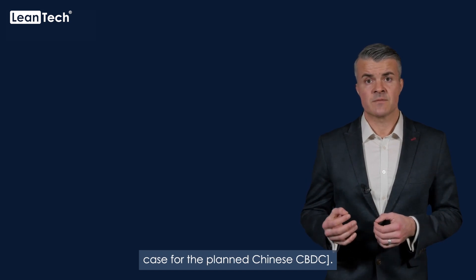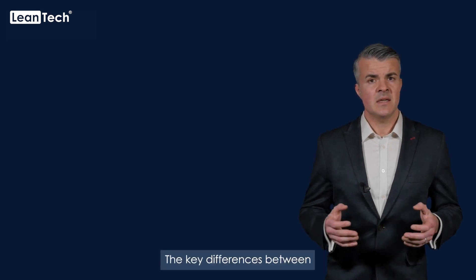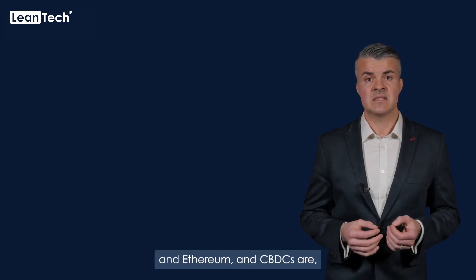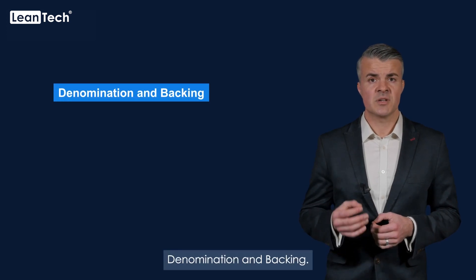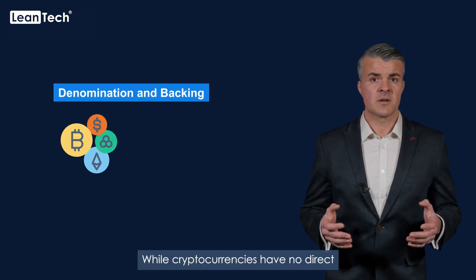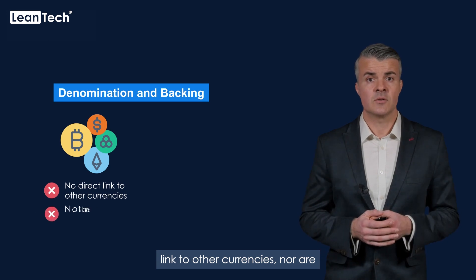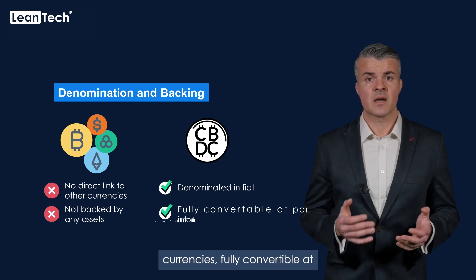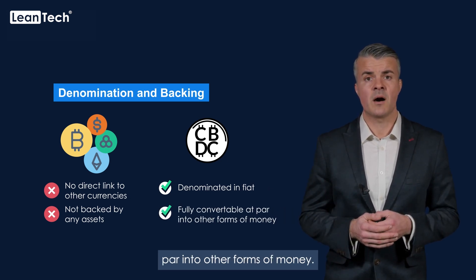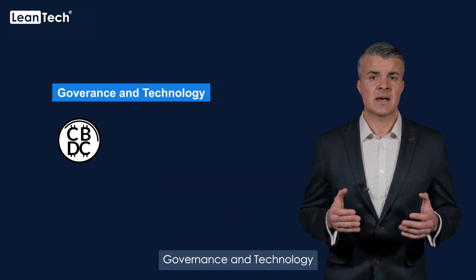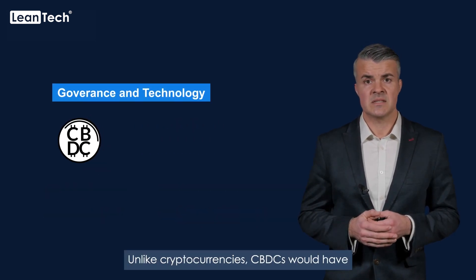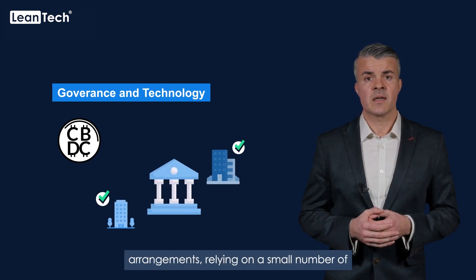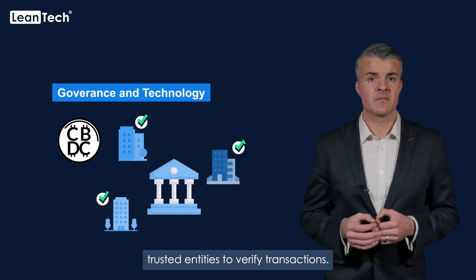This will apparently be the case for the planned Chinese CBDC. The key differences between cryptocurrencies such as Bitcoin and Ethereum and CBDCs are: denomination and backing — while cryptocurrencies have no direct link to other currencies nor are backed by any assets, CBDCs would be denominated in fiat or sovereign currencies, fully convertible at par into other forms of money. Governance and technology — unlike cryptocurrencies, CBDCs would have centralized permissioned governance arrangements, relying on a small number of trusted entities to verify transactions.